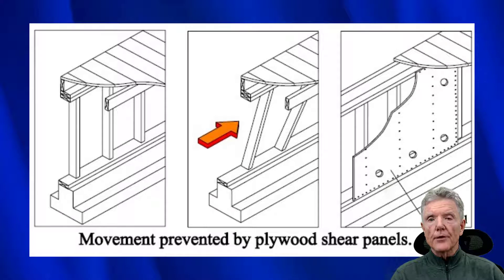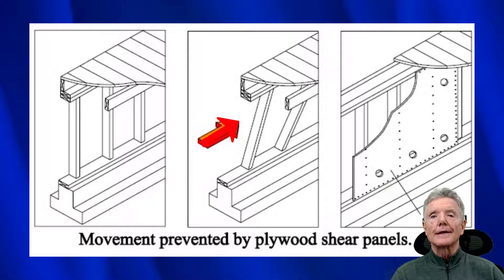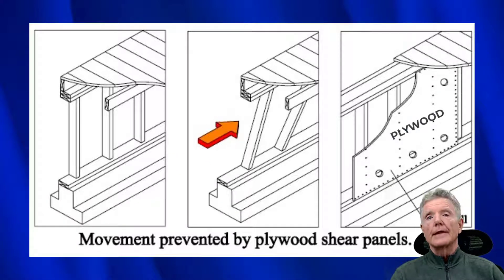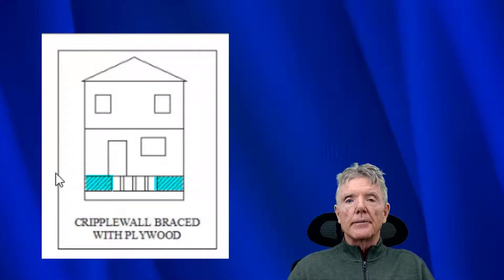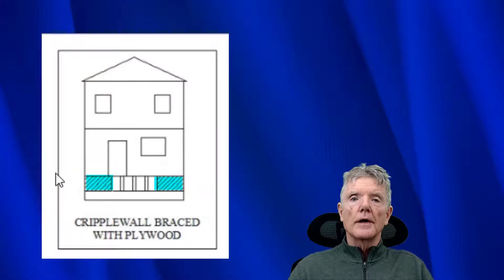Plywood is what prevents cripple walls from collapsing. As you can see here, as the earthquake force tries to cause the cripple wall to collapse, we just put plywood on it to prevent that from happening.